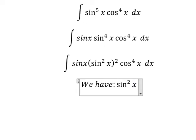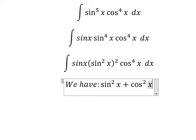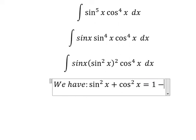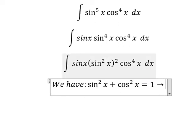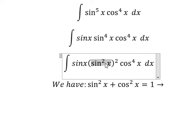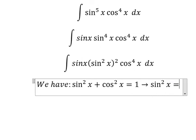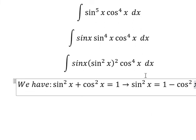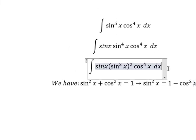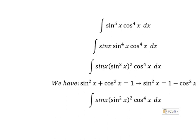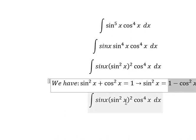sin² x plus cos² x equals to 1, so because we have sin² x, I will put cos² x to the left, oh sorry, to the right. So sin² x we change by 1 minus cos² x.